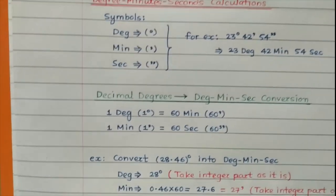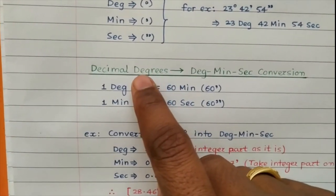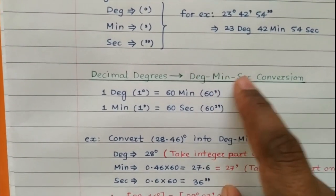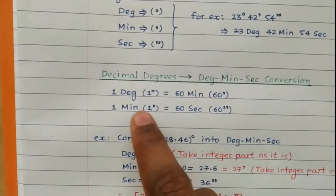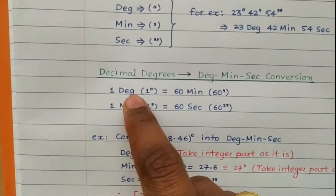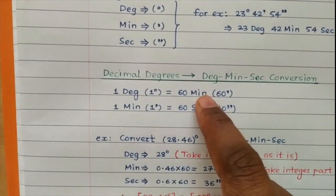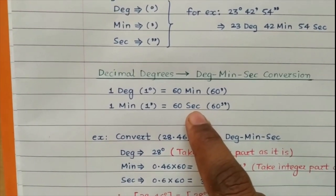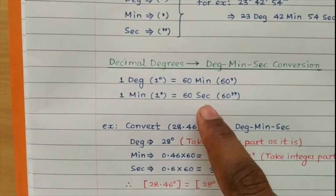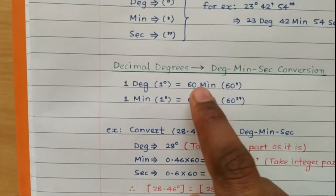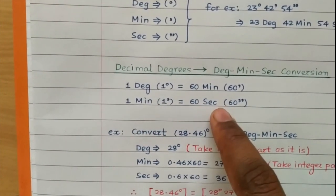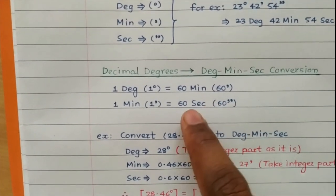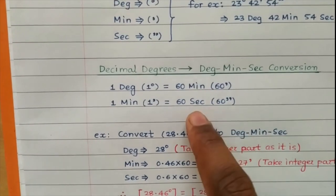Our aim is to convert an angle given in decimal degrees into degrees, minutes and seconds. Remember: one degree is equal to 60 minutes, and one minute is equal to 60 seconds. This is the same as your time scale where one hour equals 60 minutes and one minute equals 60 seconds. The only difference is that here the angle is measured in degrees, minutes and seconds.